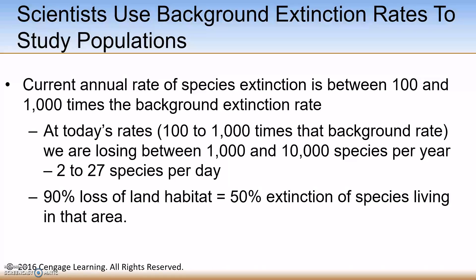Currently, we are losing 2 to 27 species per day, or 1,000 to 10,000 species per year. One of the main contributing causes of species extinction, or species becoming threatened or endangered, is loss of habitat. If 90 percent loss of land habitat occurs, about 50 percent of the species living in that area will become extinct. So protecting habitat must be a component of how we protect species populations.